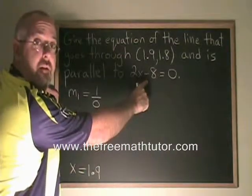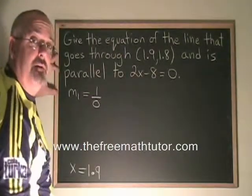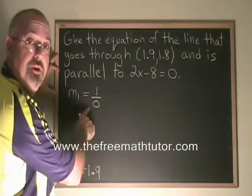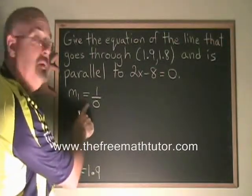All vertical lines have an undefined slope. And the easiest way to express an undefined slope in the form of a fraction is to say m1 is equal to 1 over 0.